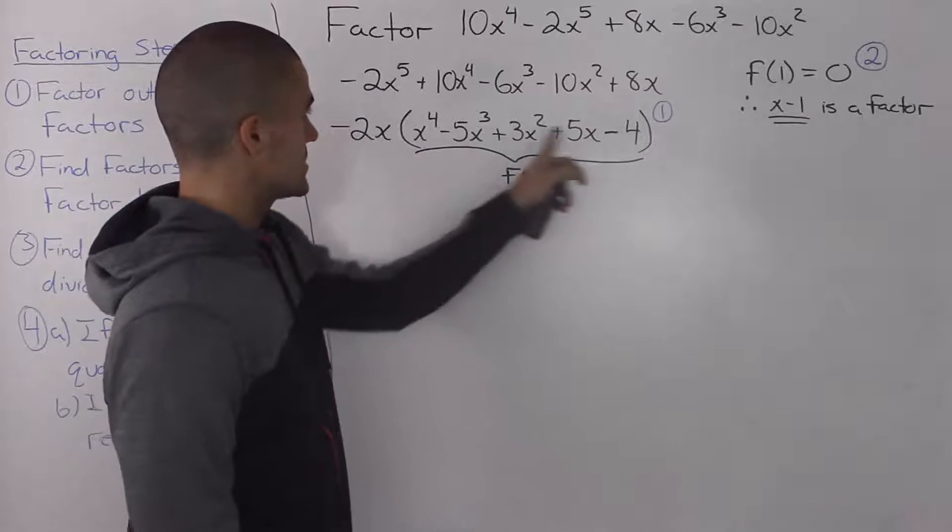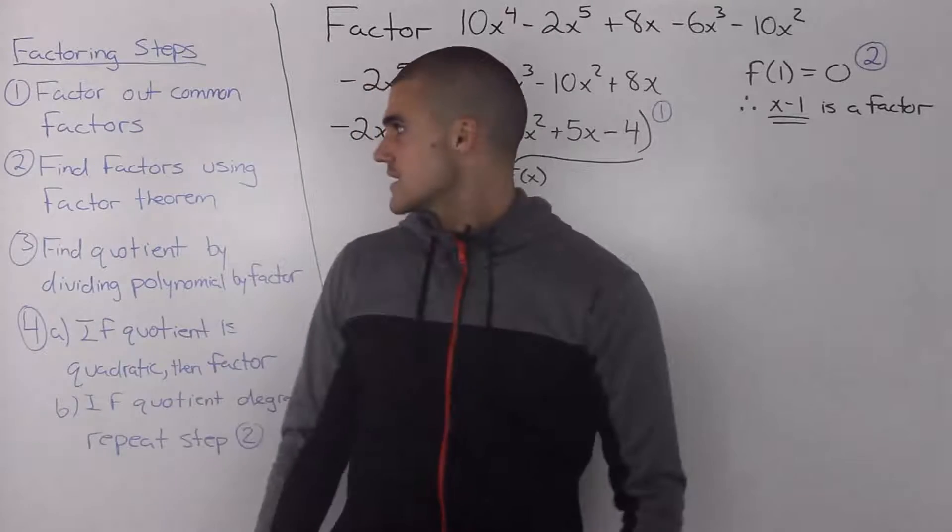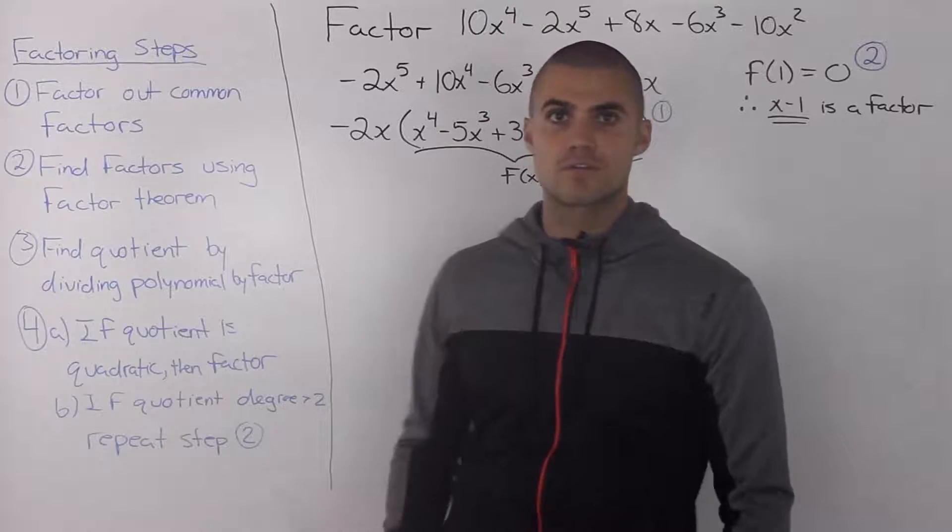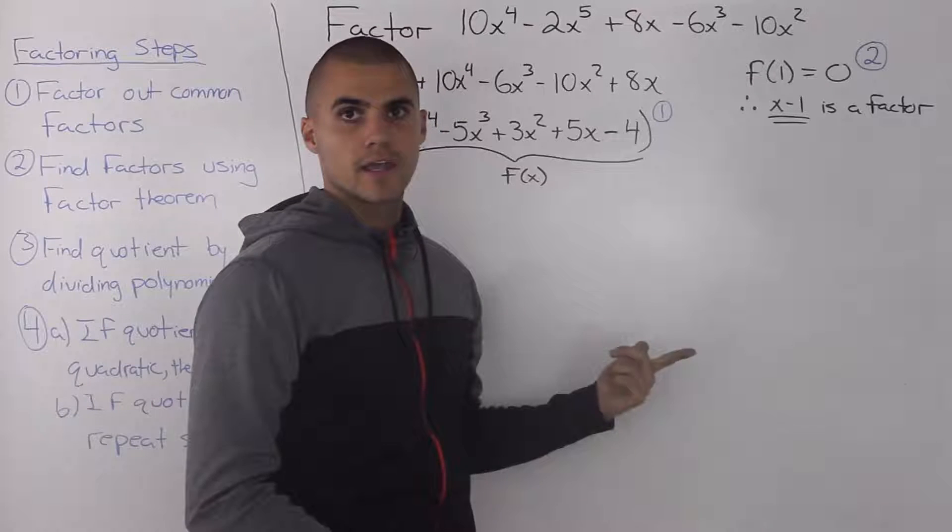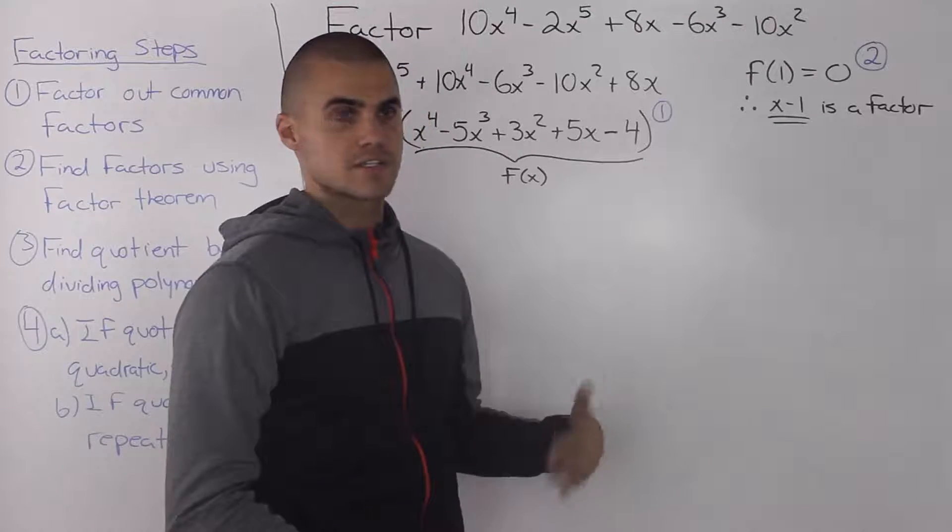And I labeled this polynomial here as f of x, just so we can refer to it easier. And step 2 says that we have to find factors using the factor theorem. So what we would do is we would take this polynomial and we would plug in a bunch of x values, plus 1, minus 1, plus 2, minus 2, etc.